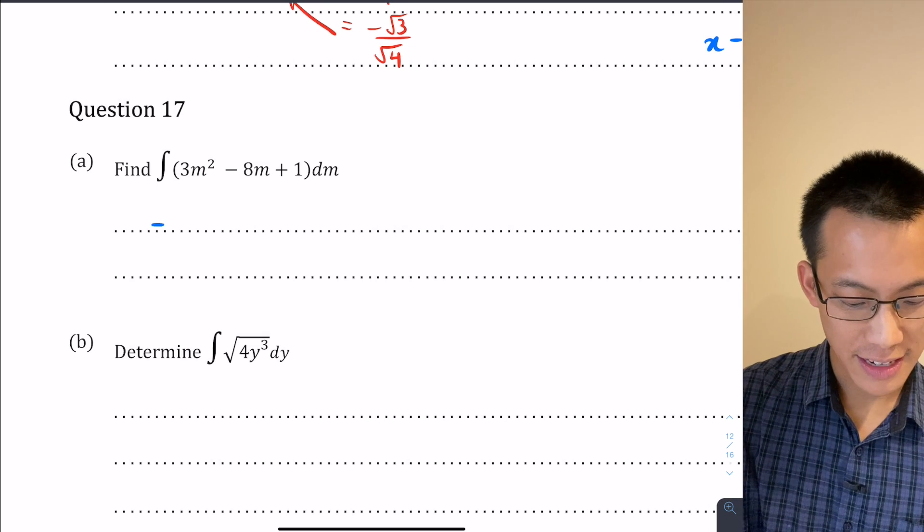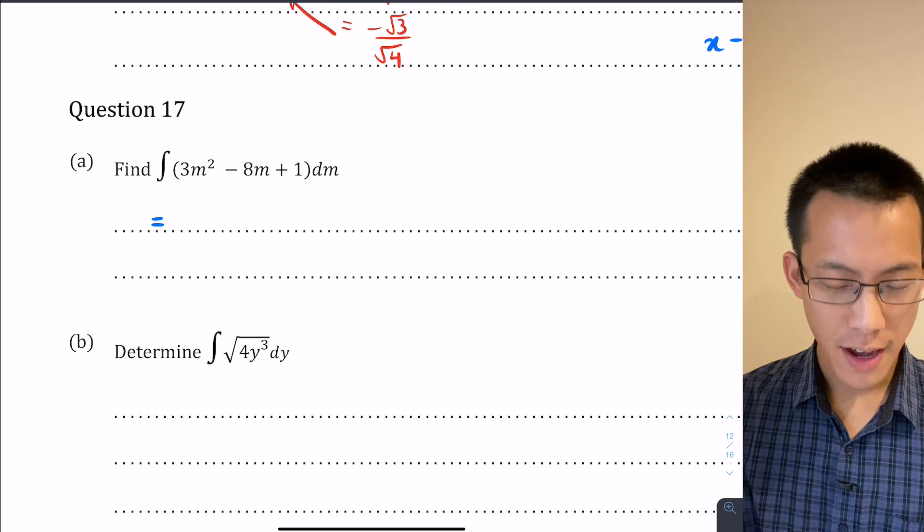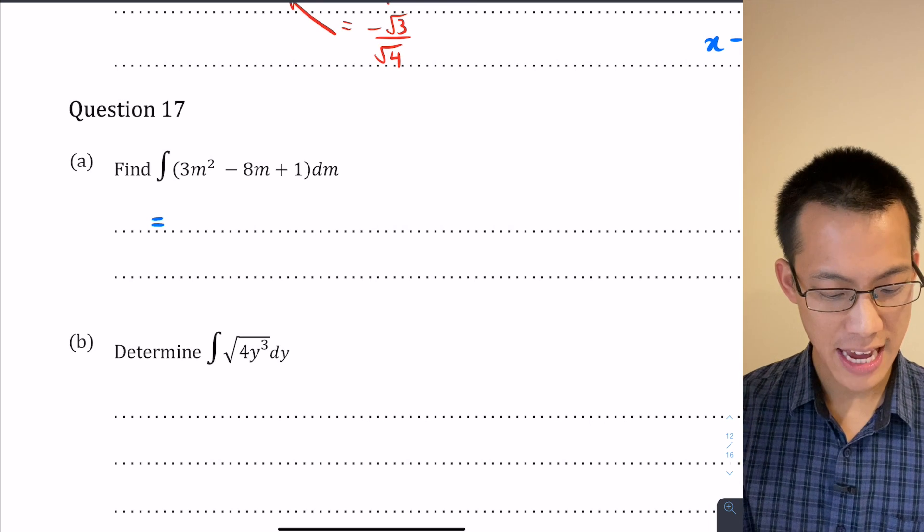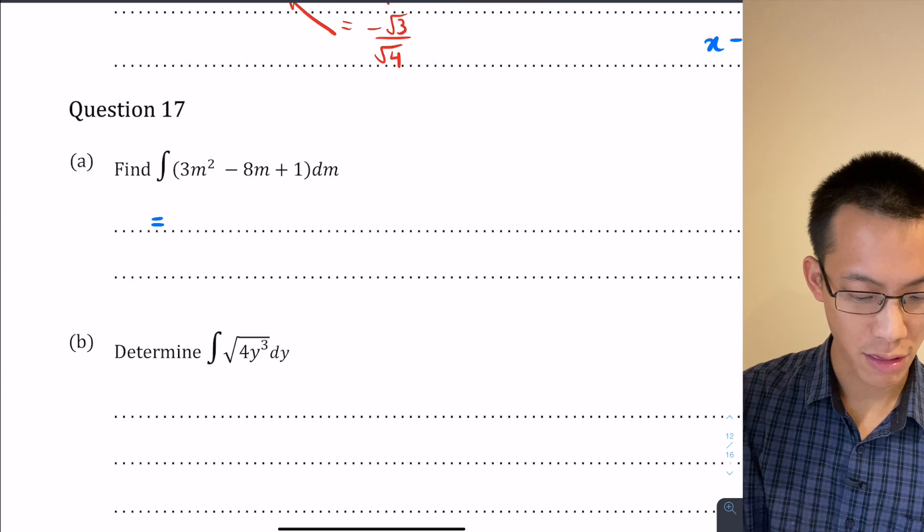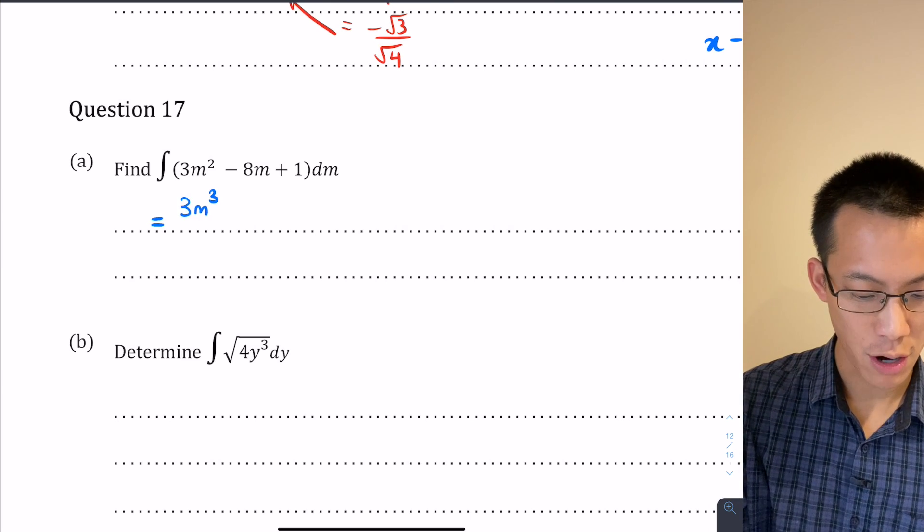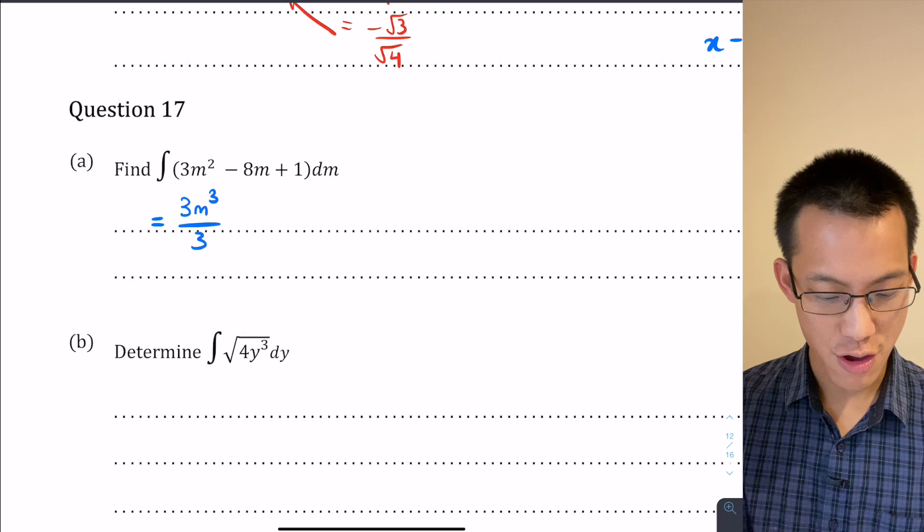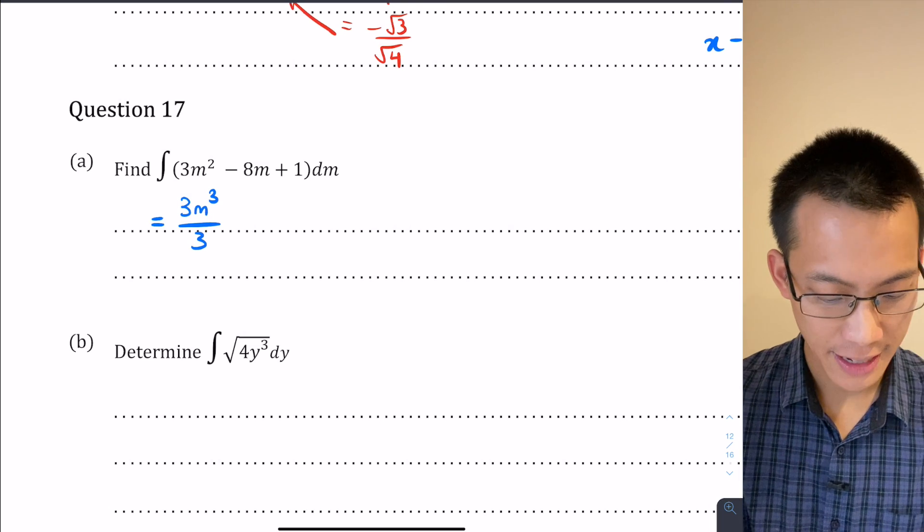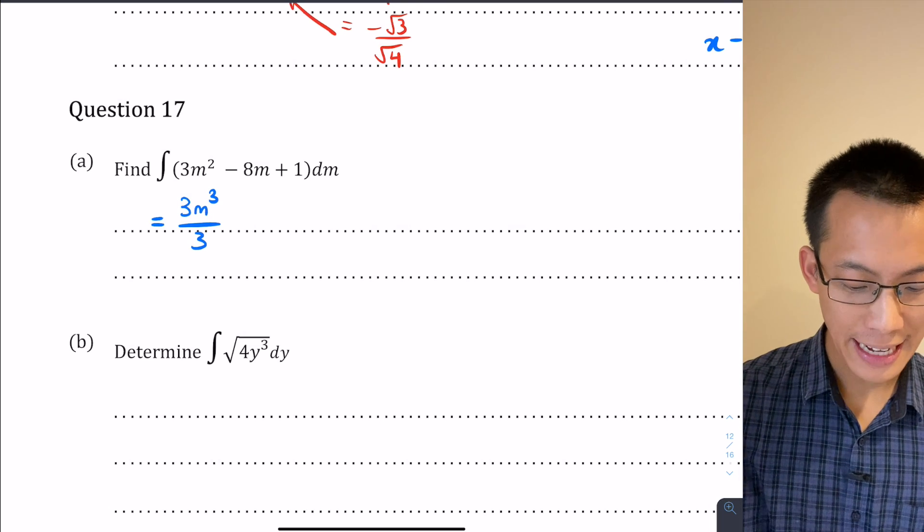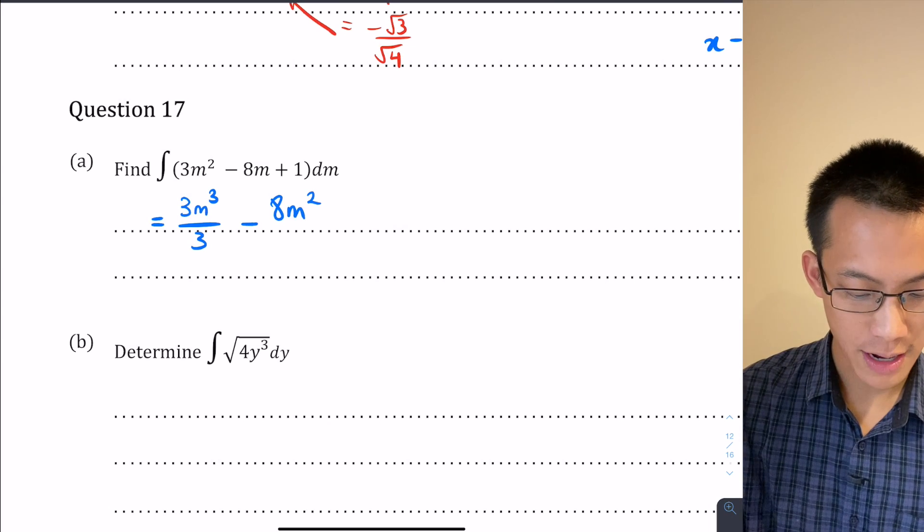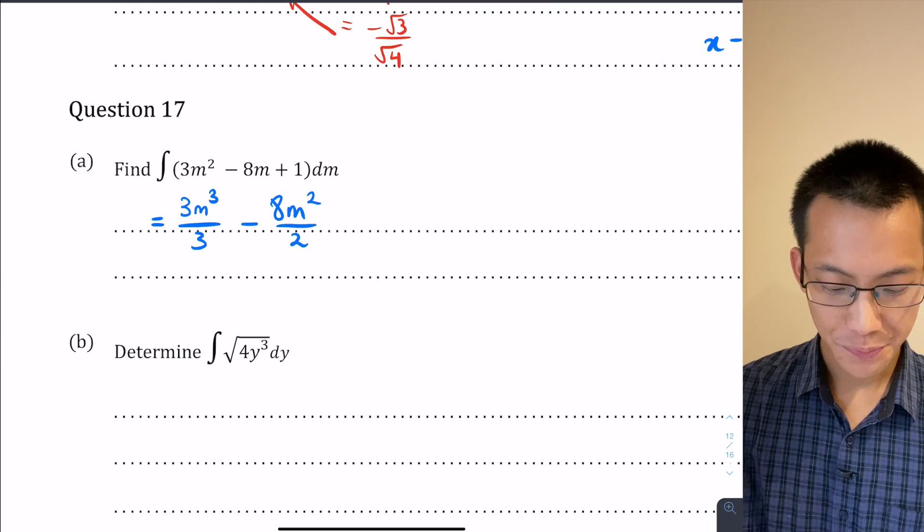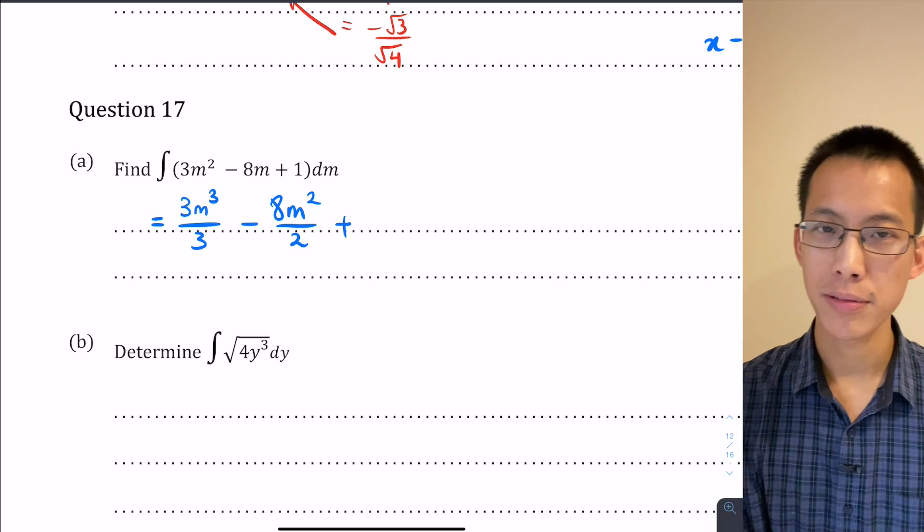I'm integrating with respect to m, so 3m² I'm going to increase the index to 3 and then divide by that new index, so 3m³ over 3, and then you have your result which we'll simplify in a second. I'll do the same thing with this 8m, so I'm going to increase that index by 1 and then divide by that new index, and then this next part here is a plus 1.